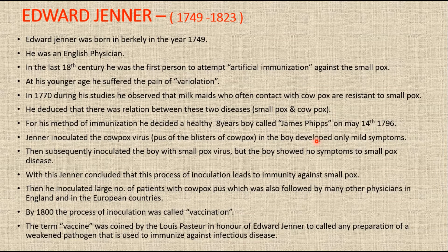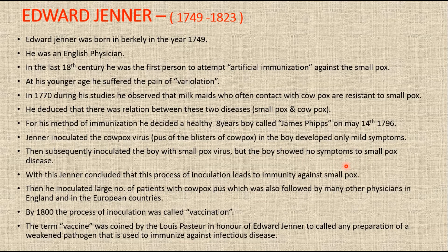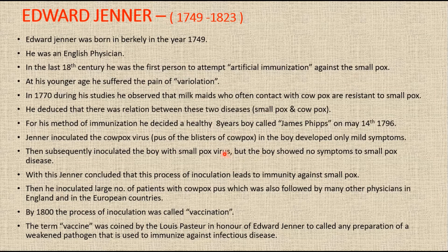In 1796, Jenner collected fluid from a cowpox pustule from the hand of one Sarah Nelmes, who was a dairymaid, and he transferred it onto the skin of a healthy eight-year-old boy called James Phipps. The boy developed typical lesions of what we now see after a vaccination. Several weeks later, Jenner inoculated this boy with fluid taken from a smallpox-affected individual, but the disease — that is, smallpox — did not appear.